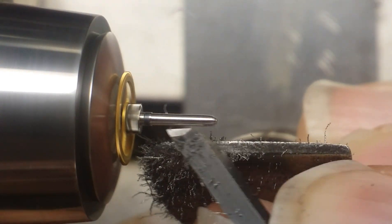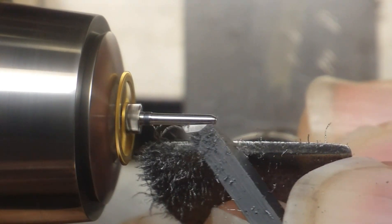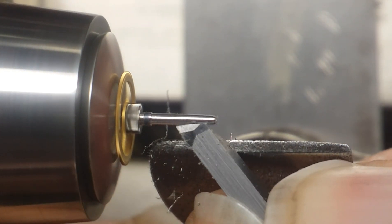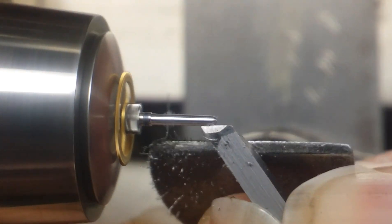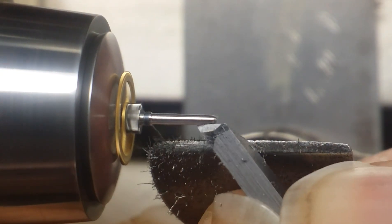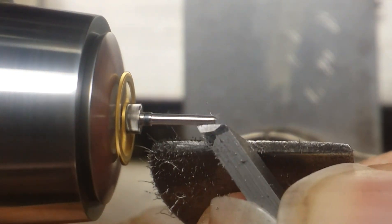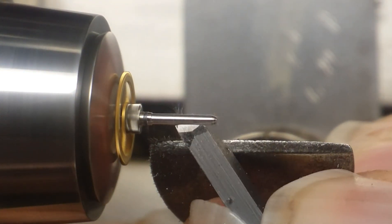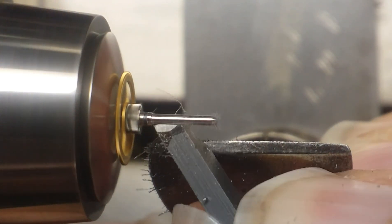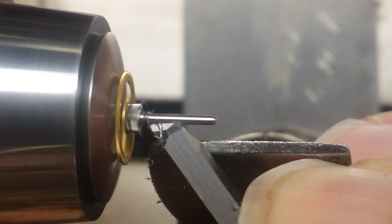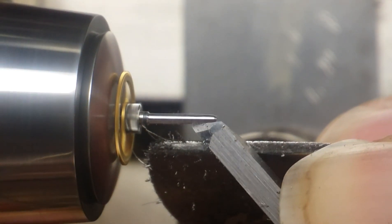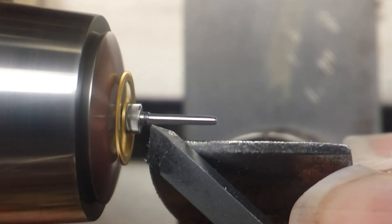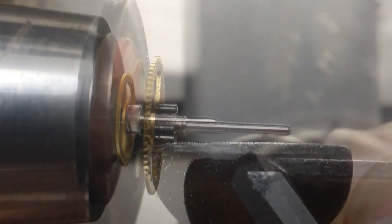But eventually we get through the outer layer and the shavings start coming off like we like to see. Now, you're going to see up close to the pinion where I'm trimming that I'm leaving a little bit of a step going out to the diameter of the blued steel that I initially put in there.